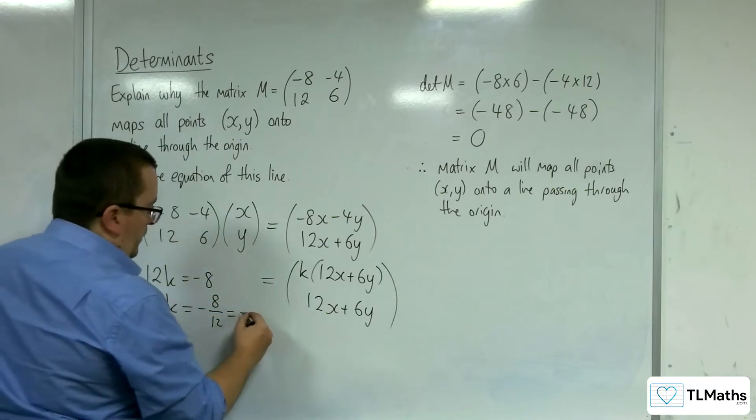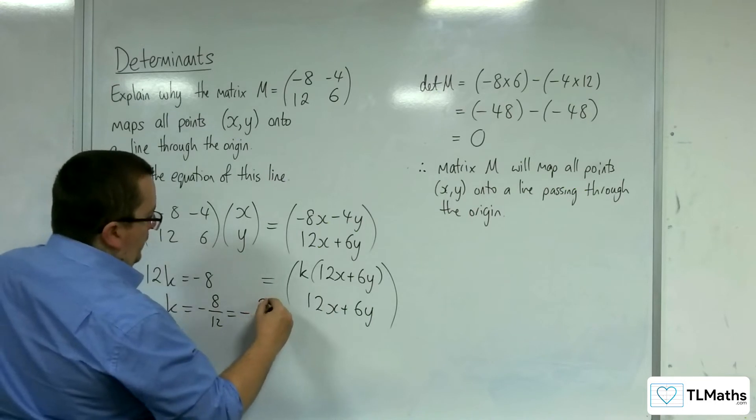So, k would have to be negative 8 over 12, which is equal to, of course, minus 2 thirds.